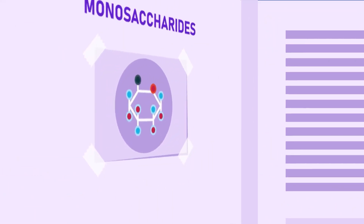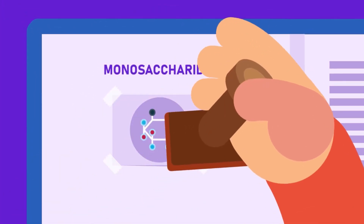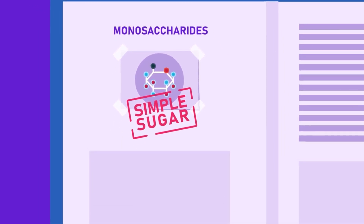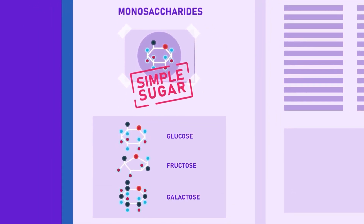Monosaccharides have a simple chemical composition and are therefore known as simple sugars. Examples of them are glucose, fructose and galactose.